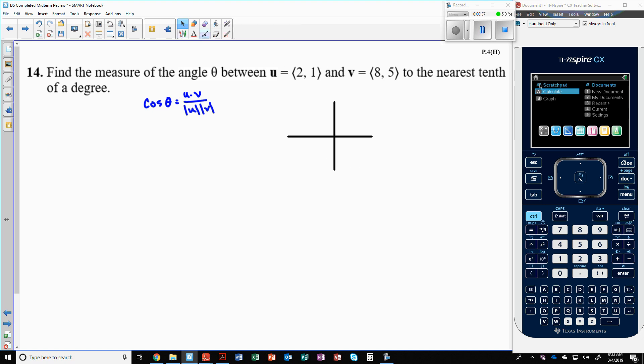This vector u is 2 to the right and 1 up, so it would be 2 units over, 1 unit up. So I'll put 1, 2, 1, and so that's at the point right there of 2, 1. And this one's 8, 5, so if I continue this on, 3, 4, 5,